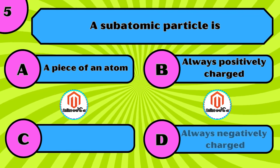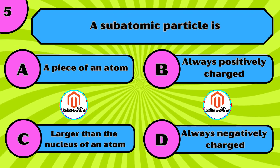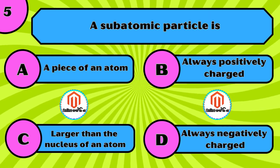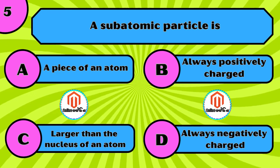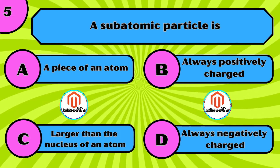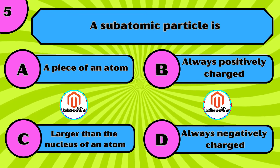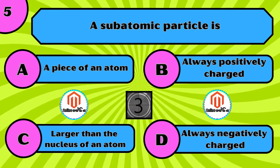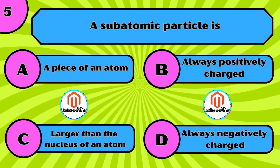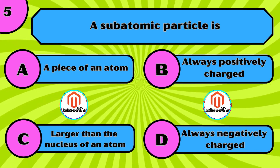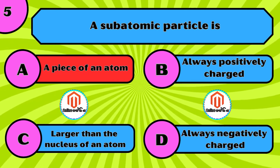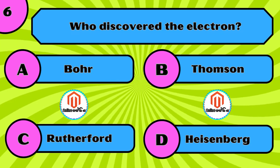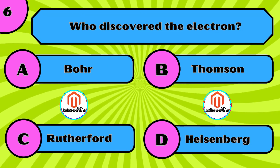A subatomic particle is: A) a piece of an atom, B) always positively charged, C) larger than the nucleus of an atom, D) always negatively charged. The correct answer is A, a piece of an atom. Who discovered the electron? A) Bohr, B) Thompson, C) Rutherford, D) Heisenberg.